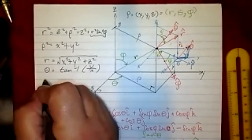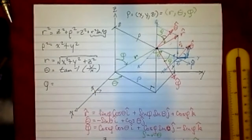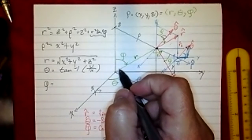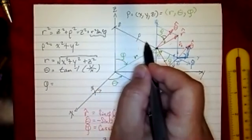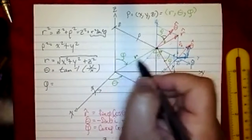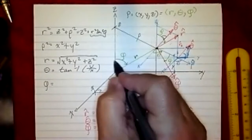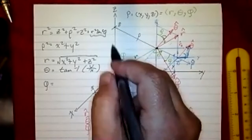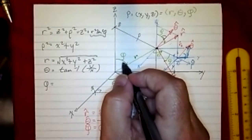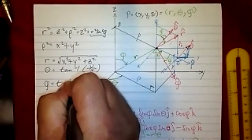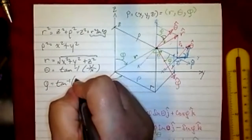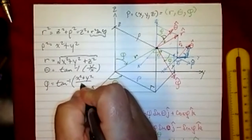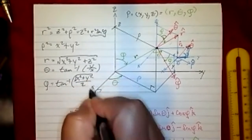Now I just need one for finding phi, and I think that is also pretty easy. Now that we know what r is, we can find phi, because phi would be the inverse tangent of the opposite — which is rho — over z. So the tangent of phi should equal rho over z, meaning phi is the inverse tangent of rho over z. And rho is, in fact, the square root of x squared plus y squared, with z in the denominator.